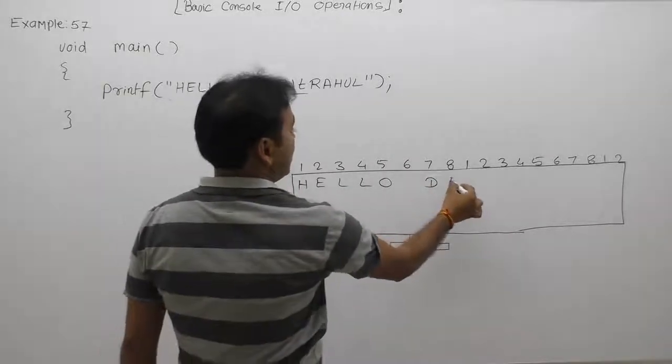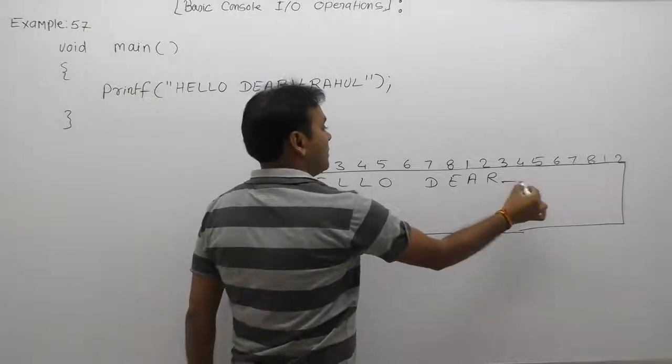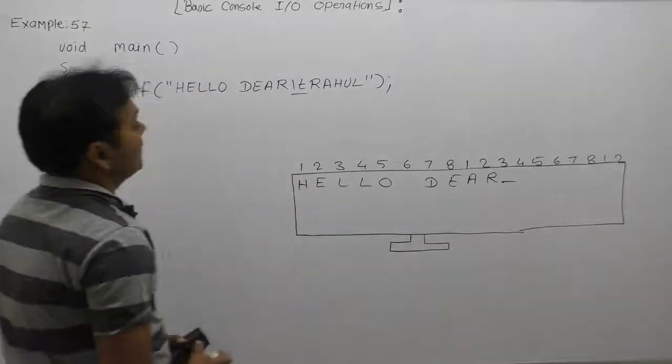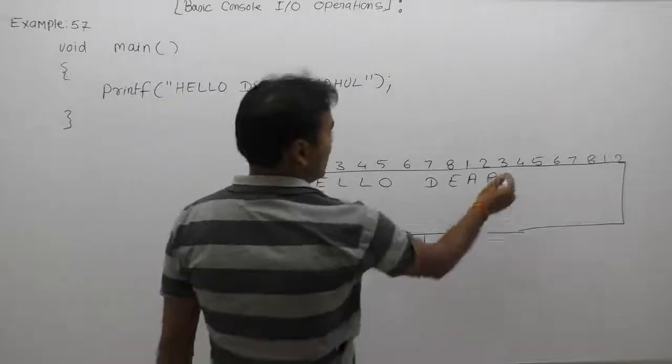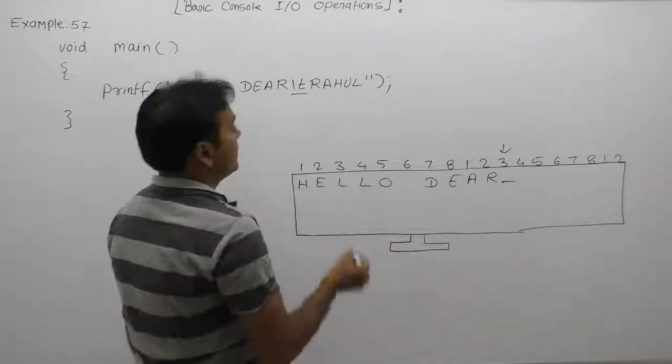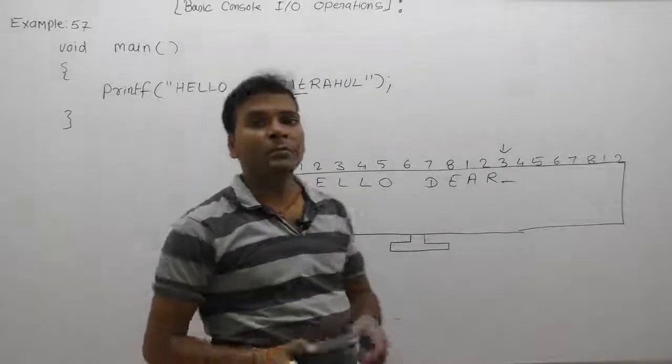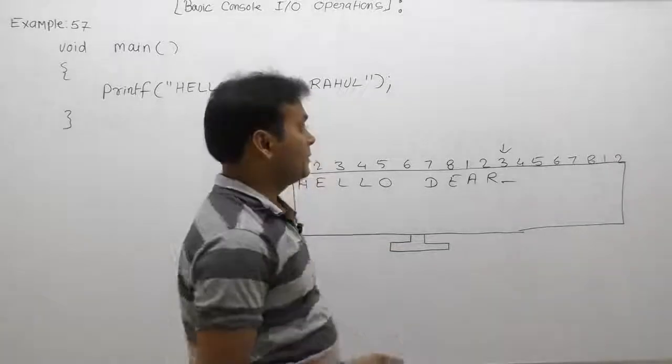After displaying 'hello dear', the cursor will be available on the third position, counting from the initial. According to slash T, it will move the cursor after eight spaces, but these eight spaces will be counted from the current expected multiple of eighth.